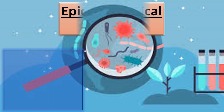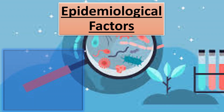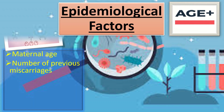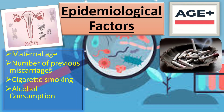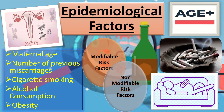The epidemiological factors of miscarriages include maternal age, number of previous miscarriages, cigarette smoking, alcohol consumption, and obesity. Maternal age and number of previous miscarriages are non-modifiable risk factors — we can't do anything with these factors as they are out of our control. But for the modifiable risk factors, we can give appropriate advice to the patient, like quitting smoking, quitting alcohol consumption, and following a healthy lifestyle to reduce weight.